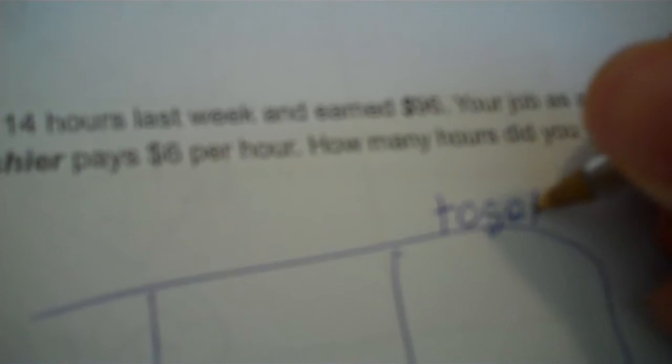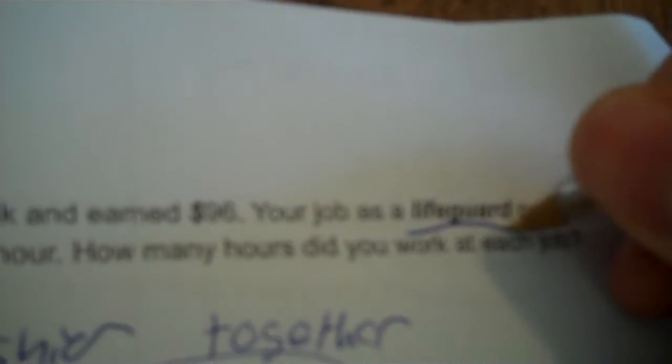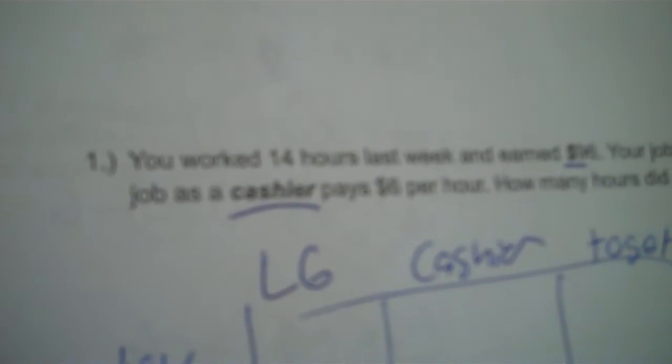You've got to label your table. Don't be lazy about that. So you've got together, how many units, per unit, and total. Money total, money per unit, and then lifeguard, cashier. You can see the things I've got highlighted. Lifeguard, cashier, money. That's in bold. That's three units. Together, how many units, per unit, total. Then the two independent units are the lifeguard and the cashier hours.